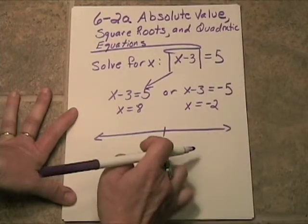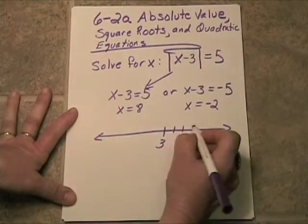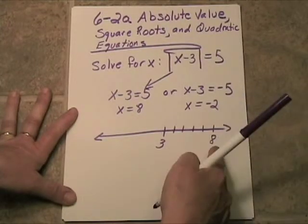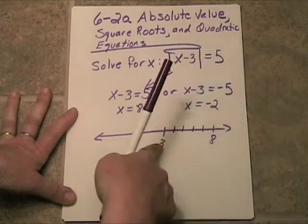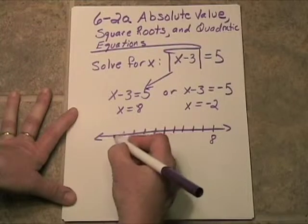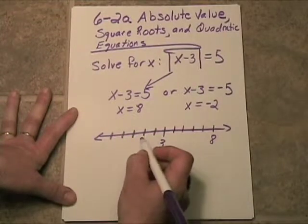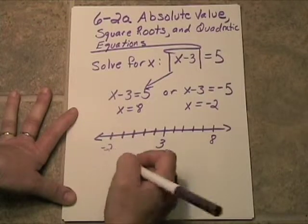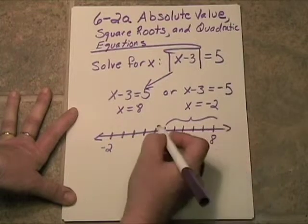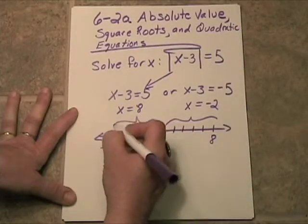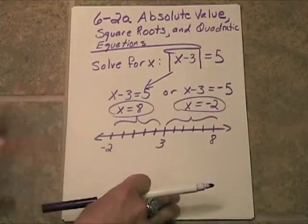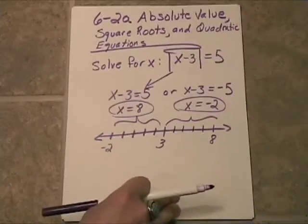So we could go to the right or we could go to the left. 1, 2, 3, 4, 5. That would put us at positive 8. Positive 8 is 5 jumps away from 3. And if we go in the other direction, 1, 2, 3, 4, 5, 2, 1, 0, negative 1, negative 2. So you can see 5 jumps here or 5 jumps here. What you need to remember is that absolute value problems are going to have 2 possible answers.